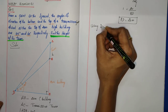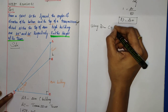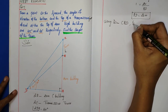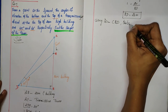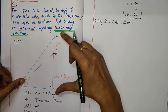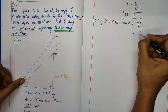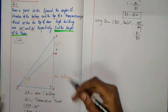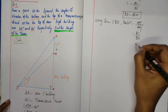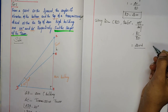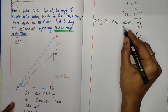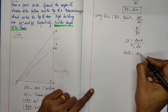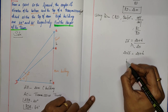Now using right angle triangle CBD, find tan 60 degrees. tan 60 = opposite / adjacent = BC / BD. BC equals 20 + h, and BD equals 20 meters. Since tan 60 = √3, cross multiplying gives 20√3 = 20 + h.